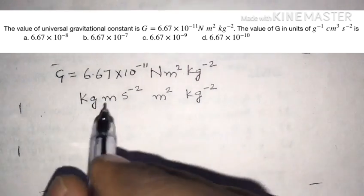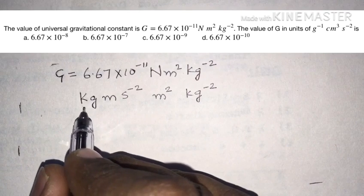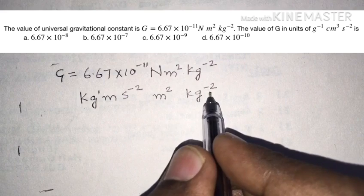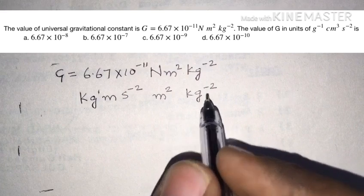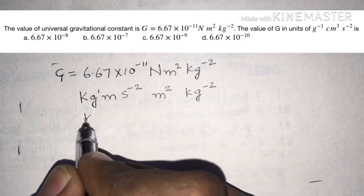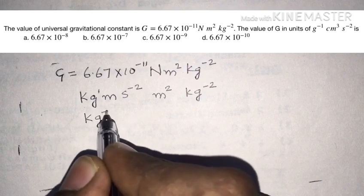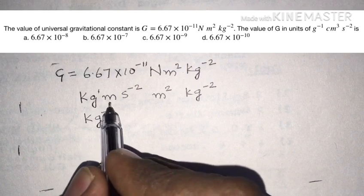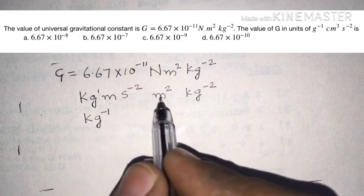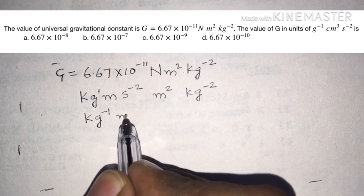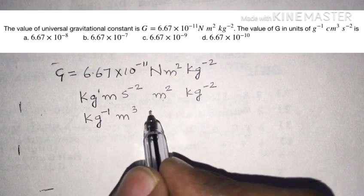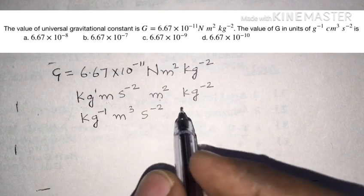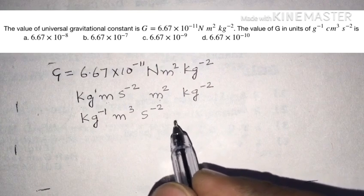Overall, kilogram appears with power 1 in the numerator and power 2 in the denominator, giving kilogram power minus 1. Similarly, meter appears with power 1 and power 2, giving meter power 3. Seconds squared is the common unit across all systems of units for time.